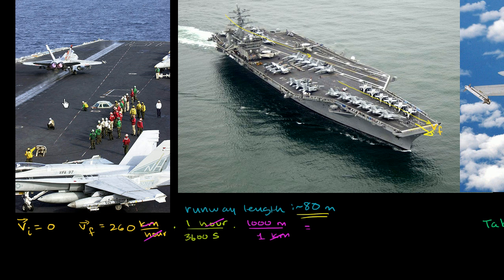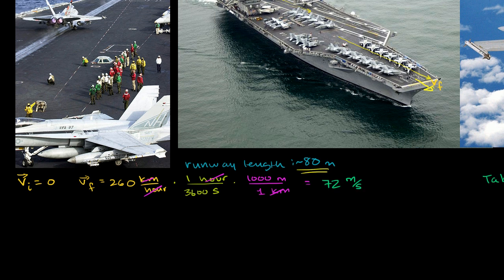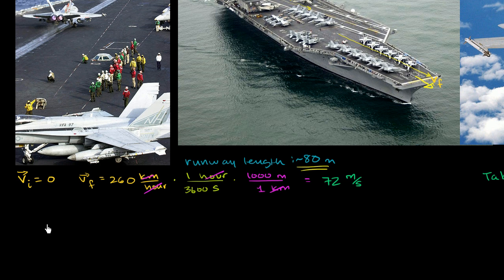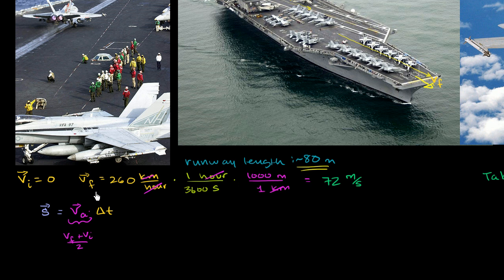So the takeoff velocity converts to 72 meters per second — that's the final velocity after accelerating. Let's figure out what that acceleration must be, given the runway length of 80 meters, assuming constant acceleration. The total displacement equals our average velocity while accelerating times the change in time. The average velocity, since acceleration is constant, is simply the final velocity plus the initial velocity over 2.